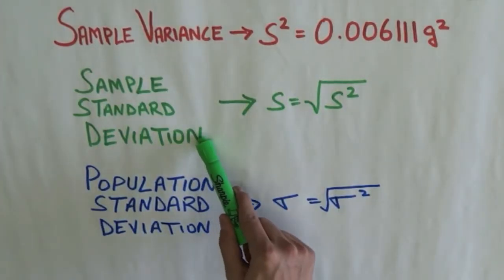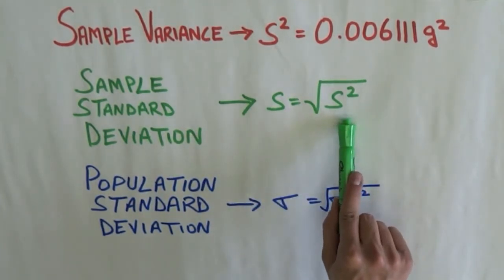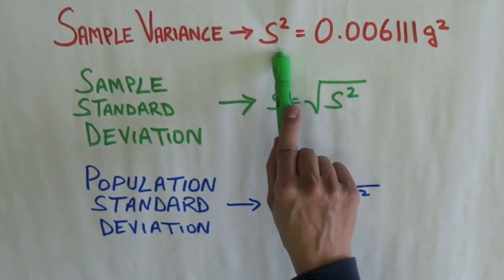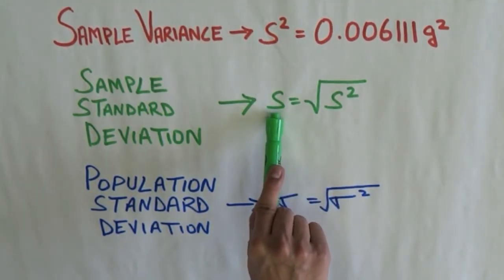Sample standard deviation is simply the square root of variance. And this is the reason why I denoted variance by s squared, so I could denote my sample standard deviation by s.